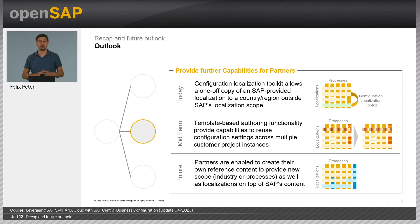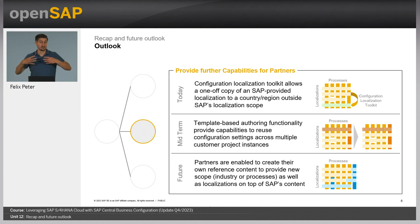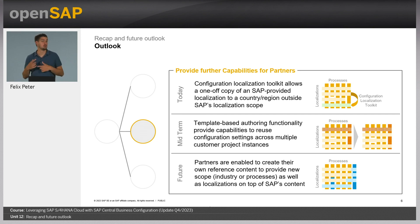In the future, we even want to go beyond that. The intent is that partners are really able to plug their capabilities into our reference scoping structure, adding their own scoping elements like industry variants, so that a customer can scope everything out of one central place — whether it is an SAP offering or a partner offering. That is our future vision for partners.